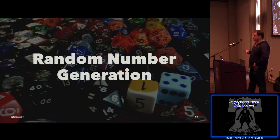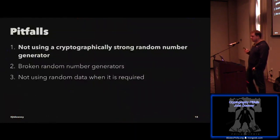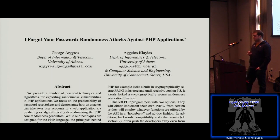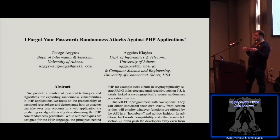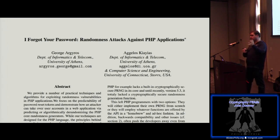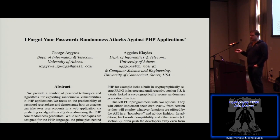First pitfall: random number generation. Random numbers are really important — we use them for encryption keys, API keys, session tokens, password reset tokens, everywhere. Our systems really do rely on this. The first pitfall is not using a cryptographically strong random number generator. There is a paper presented at the 2012 USENIX conference called 'I Forgot Your Password: Randomness Attacks Against PHP Applications,' where they surveyed PHP applications and found some using the built-in Mersenne Twister to generate password reset tokens. Through analysis, they were able to guess password reset tokens sent to users' email and use them to reset passwords.